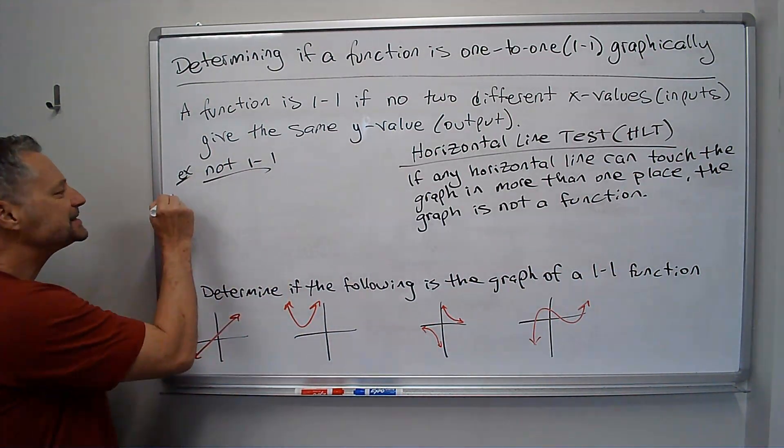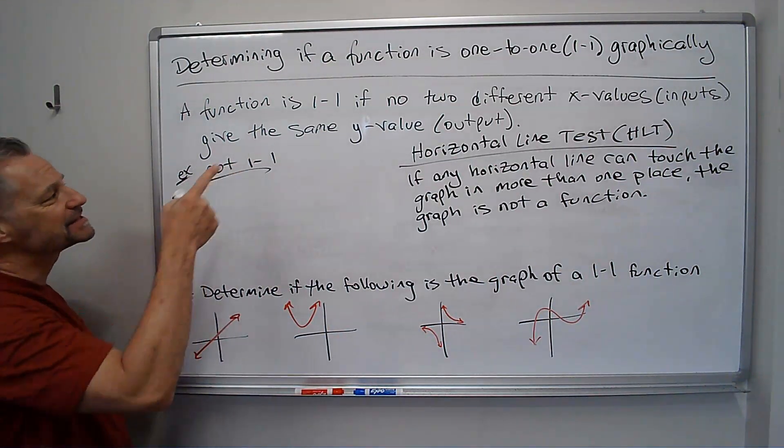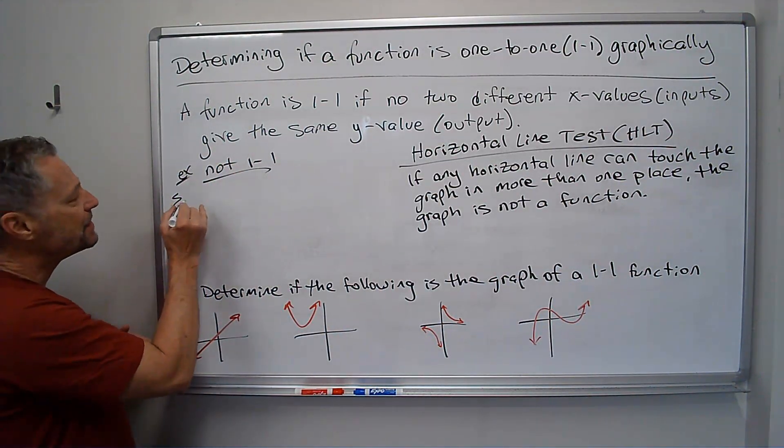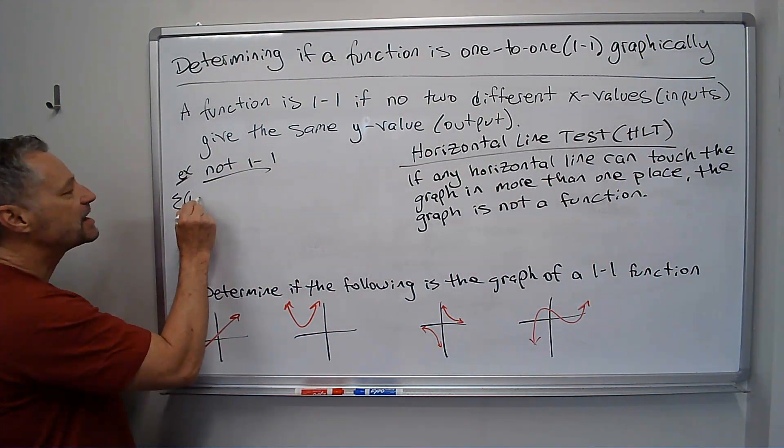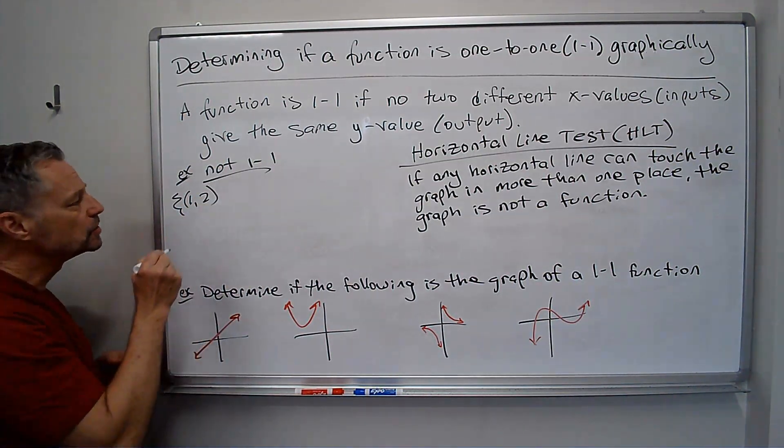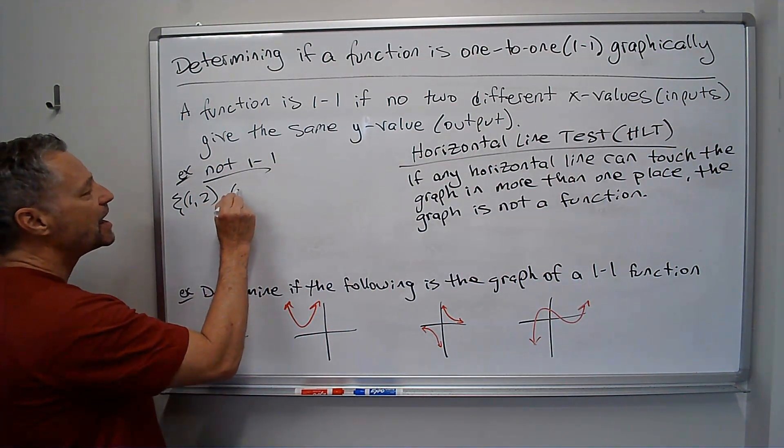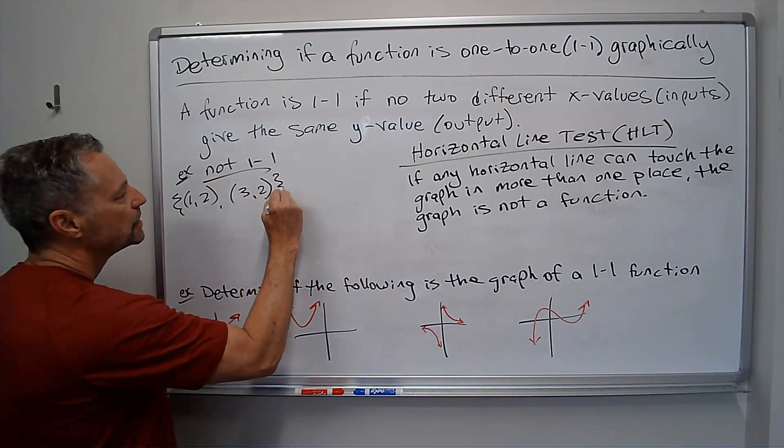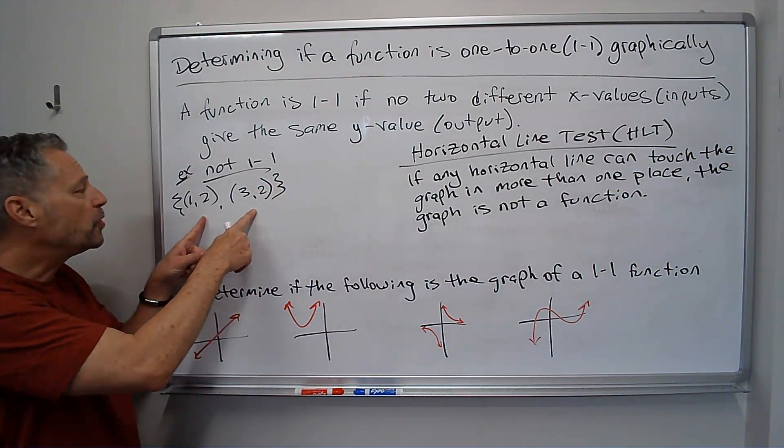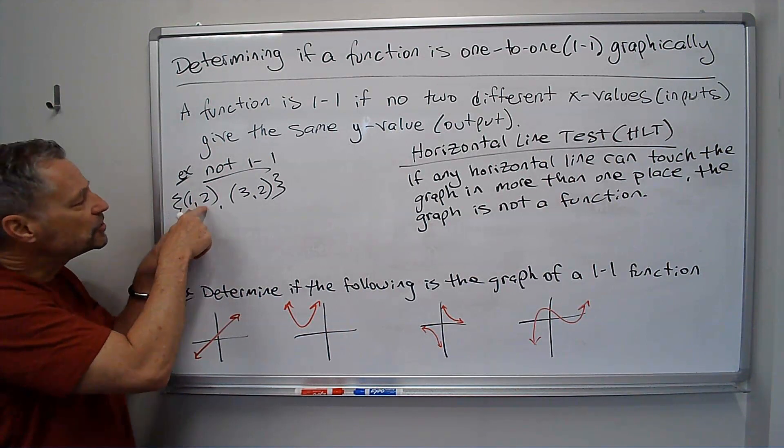So think about not one-to-one. For instance, I may have a problem that's not one-to-one. If I have the point one going to two and we'll also have three going to two, just the existence of these two points, it's still a function because one only goes to two, three only goes to two.